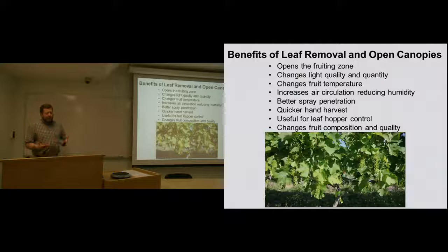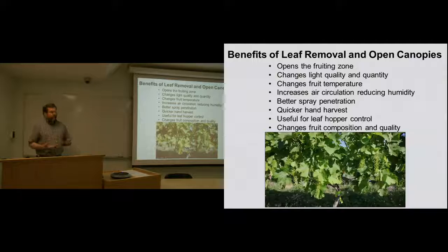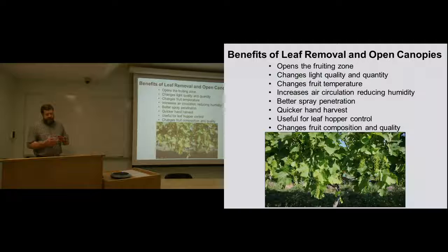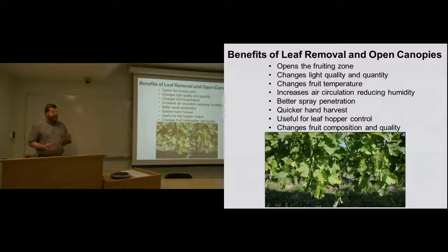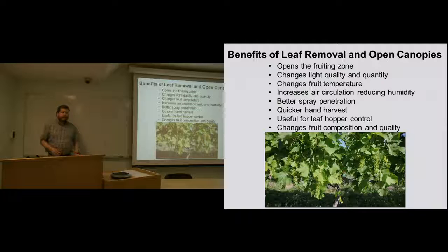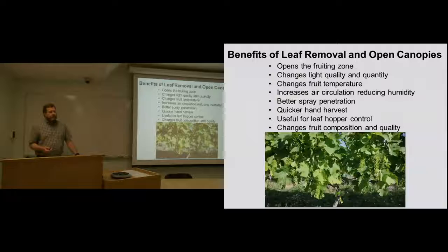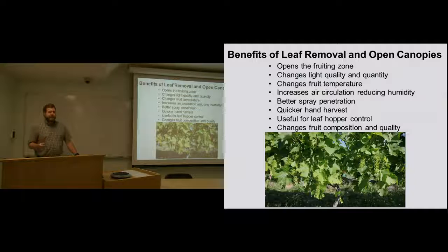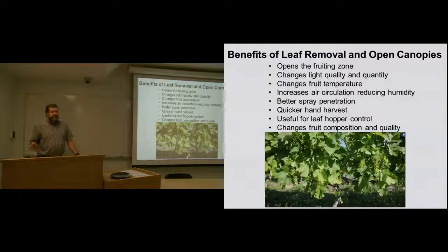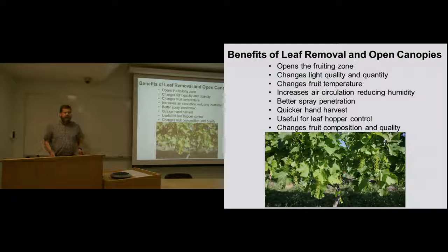If we're talking about leaf removal and open canopies, there's a lot of benefits by having this. By opening that fruiting zone, you can change the light quality and quantity, it changes the fruit temperature in that environment, it increases air circulation, you get better spray penetration, and you can hand harvest a lot quicker because you can see the fruit easier. Tom Lowry, what really kicked a lot of this off for me was a study that Tom Lowry did where he used leaf removal at a certain stage early in the season to control leaf hoppers. By removing leaves right at the perfect time when the eggs are being laid, you can reduce leaf hopper numbers by 70% or 80%.